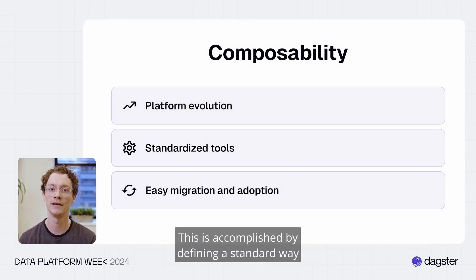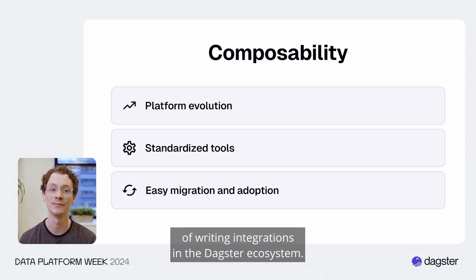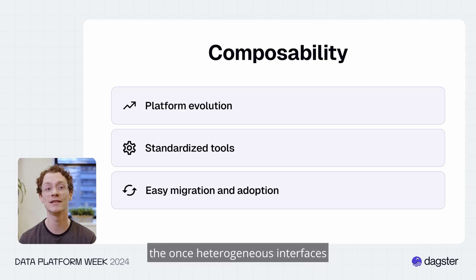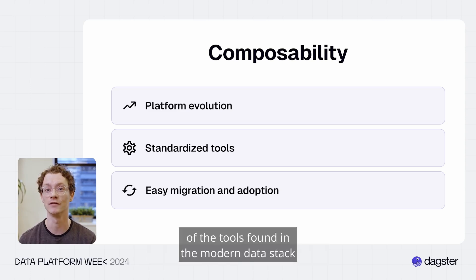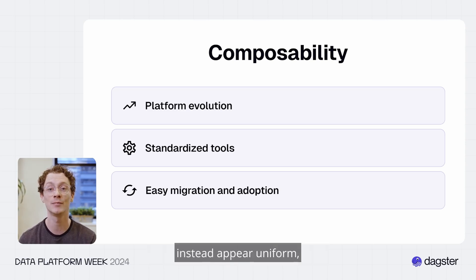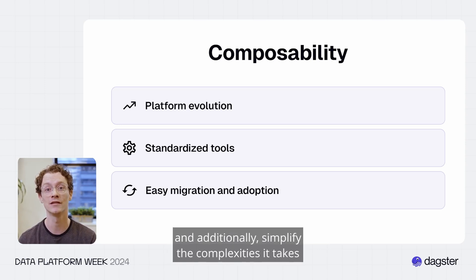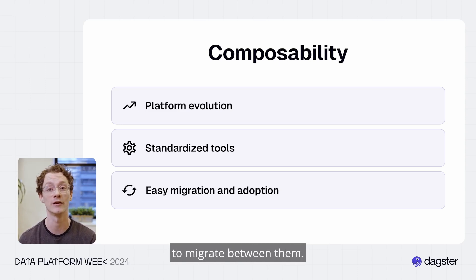This is accomplished by defining a standard way of writing integrations in the Daxter ecosystem. By conforming to a standard way of interfacing with tools, the once heterogeneous interfaces of the tools found in the modern data stack instead appear uniform, making it much easier to learn and adopt new tools and simplify the complexities it takes to migrate between them.